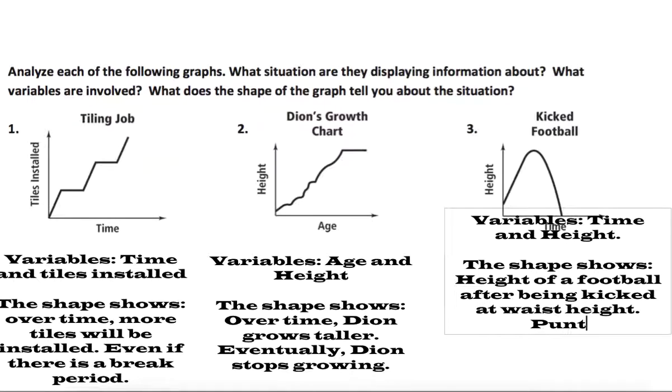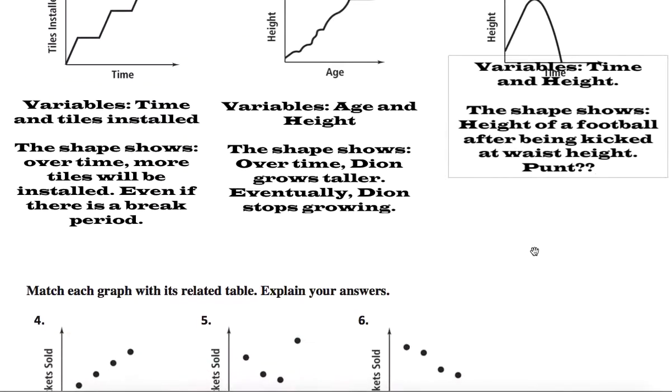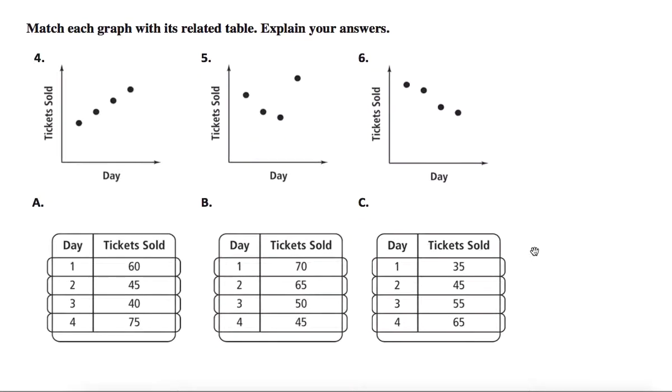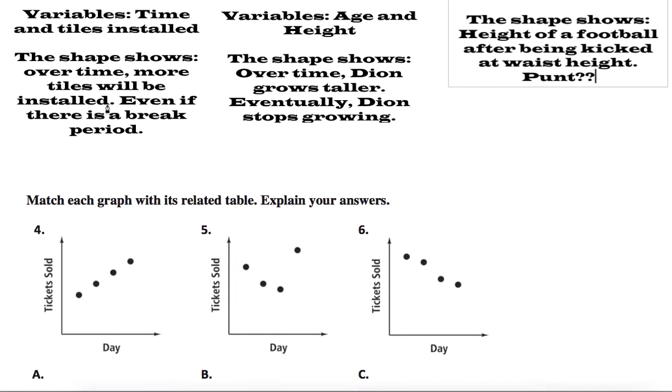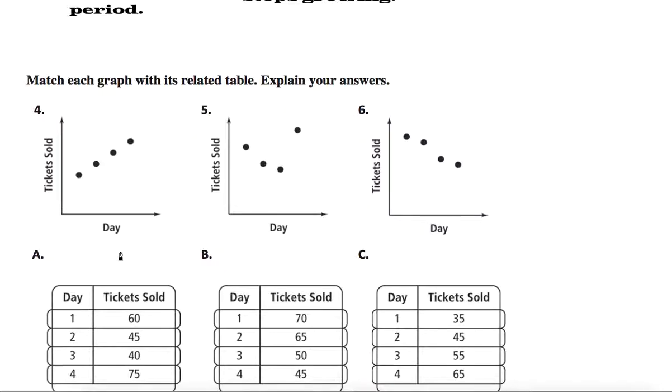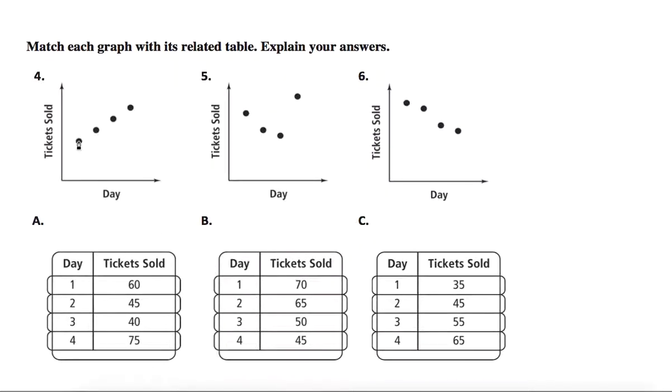As far as matching, we see that we have some dots here. This is different than what we just saw because this is just straight dots. So let's compare and contrast. We see that this first graph shows over a certain number of days a number of tickets are sold, and this is moving up and up. So let's match this with something as far as the table that's going up and up. Day one 35, day two 45, we see that this is going up and up. We see that this is increasing, so we could say that this graph C is going to correlate to this graph.